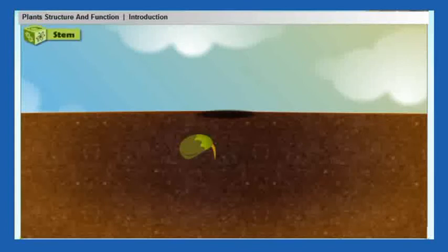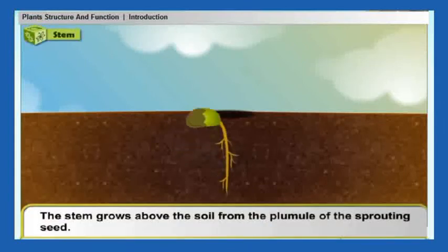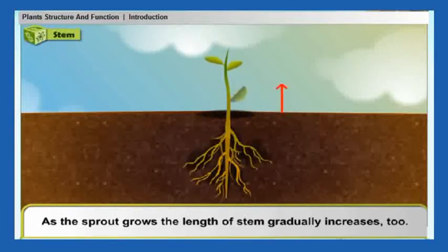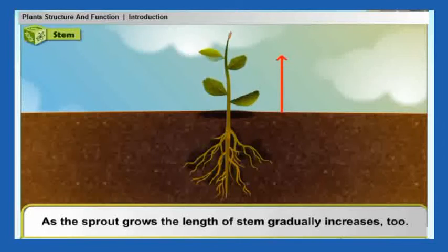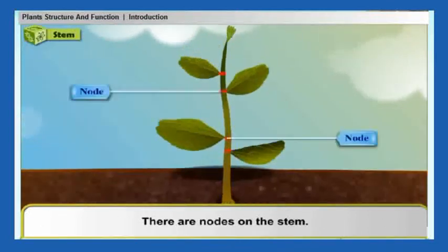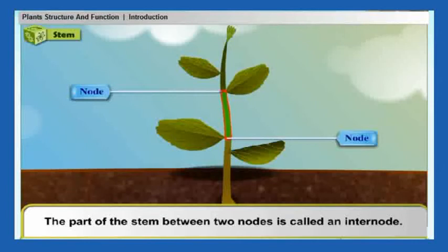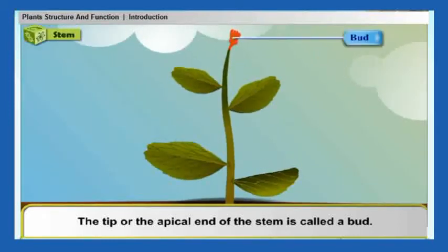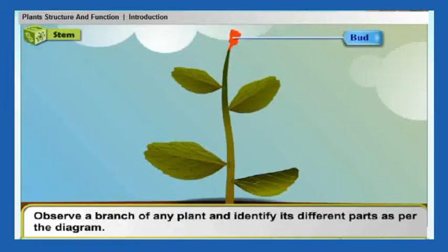The stem grows above the soil from the plumule of the sprouting seed. As the sprout grows, the length of the stem gradually increases too. There are nodes on the stem, and leaves come out at the nodes. The part of the stem between two nodes is called an internode. The tip or apical end of the stem is called a bud. Observe a branch of any plant and identify its different parts as per the diagram.